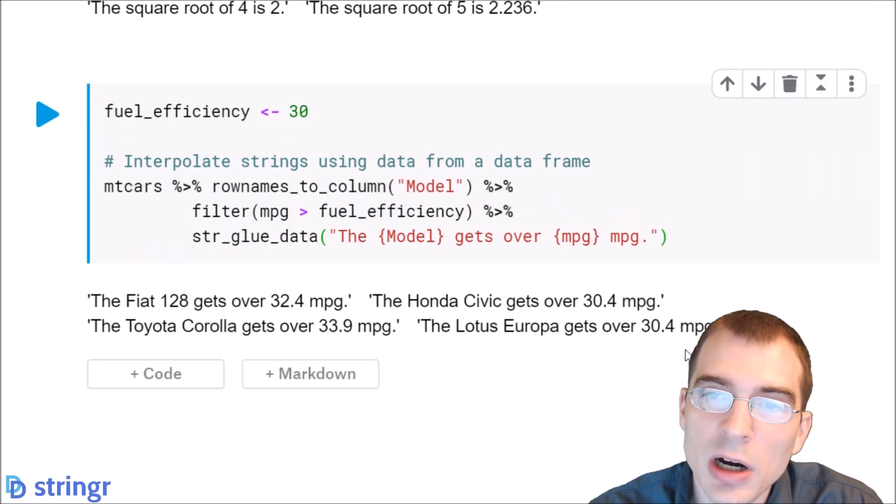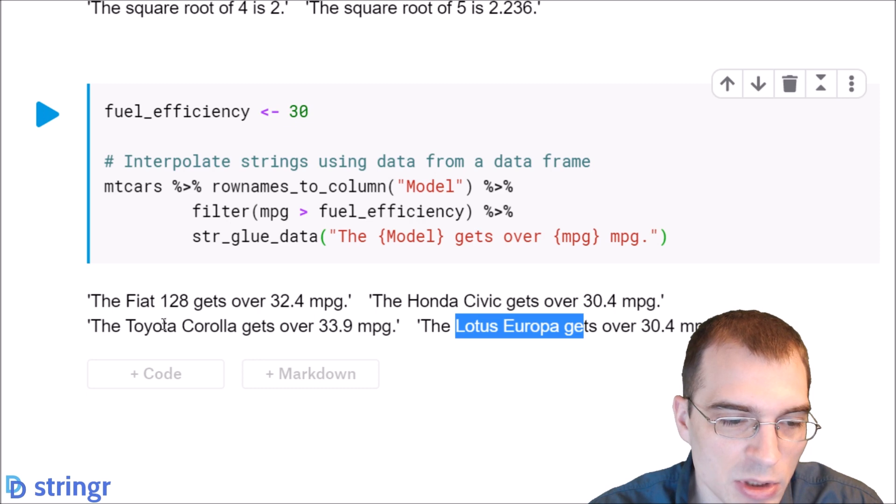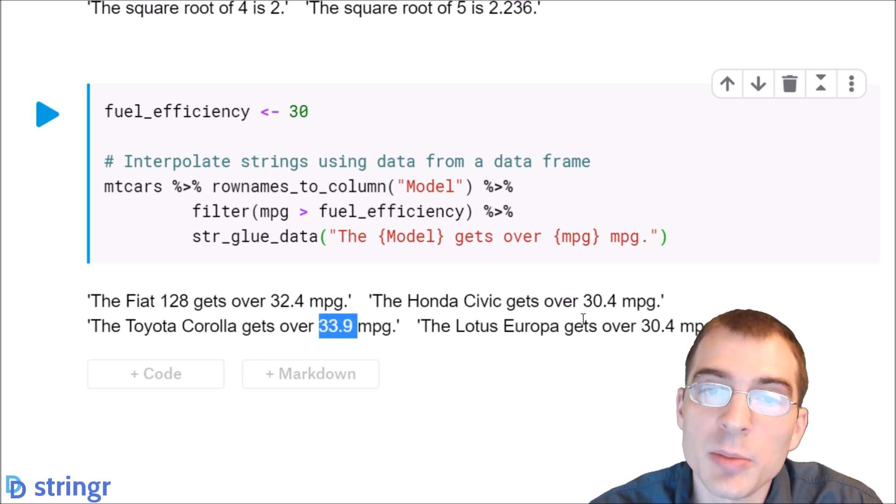It looks like four cars got a mpg above 30, the Fiat 128, Honda Civic, Toyota Corolla, and Lotus Europa. And we can see that of those, the Toyota Corolla was king with 33.9 mpg.